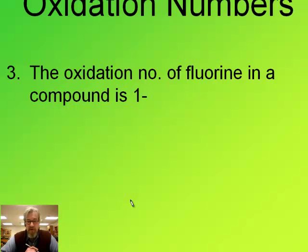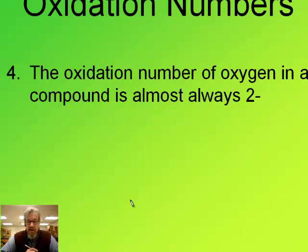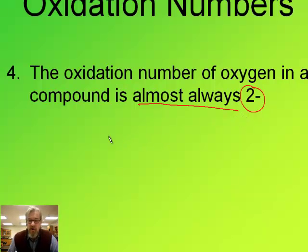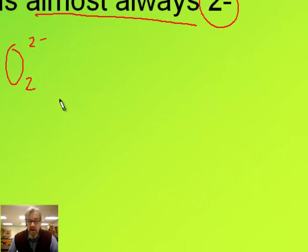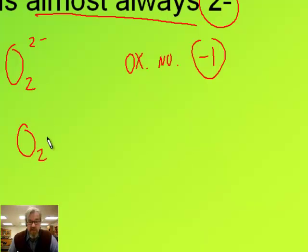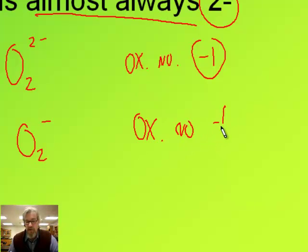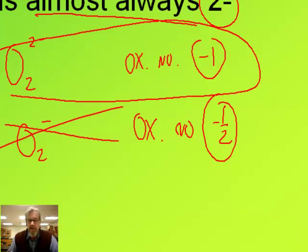The oxidation number of fluorine in a compound is always minus one. The oxidation number of oxygen in a compound is almost always negative two. There are two exceptions: peroxide, O2 two minus, where oxygen's oxidation number is minus one; and superoxide, O2 one minus, where the oxidation number is minus one half — which is unusual. You won't see superoxide; that's very rare. Peroxide you might see once in a while — it's on your polyatomic ion sheet.